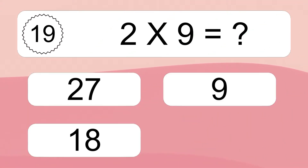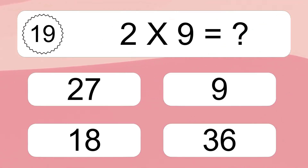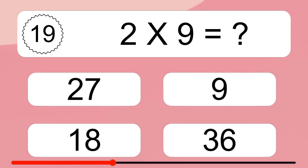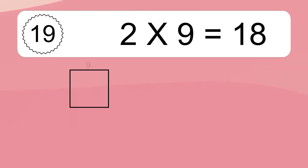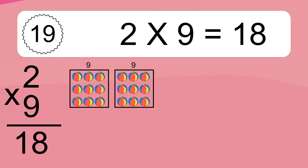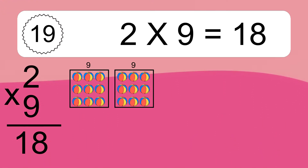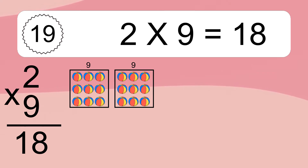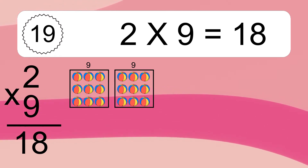2 times 9 equals what? 2 times 9 equals 18. We have 2 boxes, and each box has 9 colorful balls inside. If you count all the balls in all the boxes together, you will have 2 times 9 balls. This equals 18 balls.